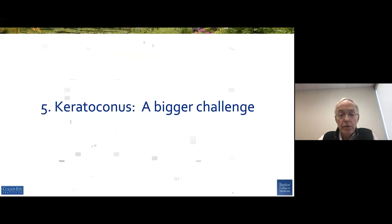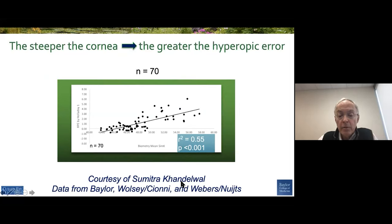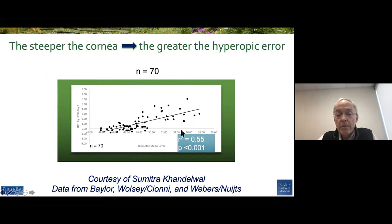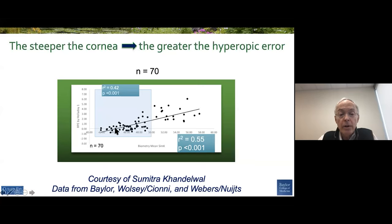Keratoconus is an even bigger challenge. Data compiled by Sumitra Kandelwal in our group from three different groups, including Rudy Knight's group, with 70 eyes — you can see the mean corneal power along the x-axis and the hyperopic error: the steeper the cornea, the greater the hyperopic error. This was with the Holladay 1, but it was really true with other formulas as well. The R-squared is pretty good for the regression line up to about 50 diopters, but above 50 diopters the R-squared is very poor, indicating the huge scatter in the data.